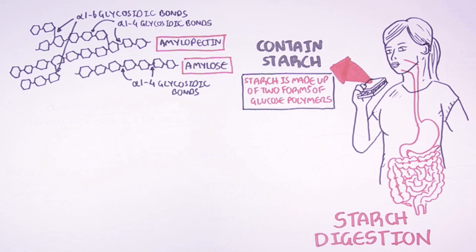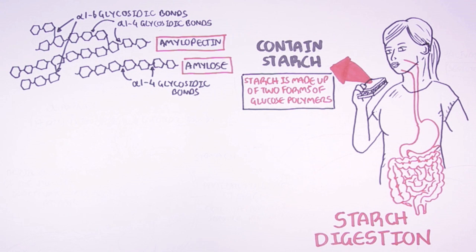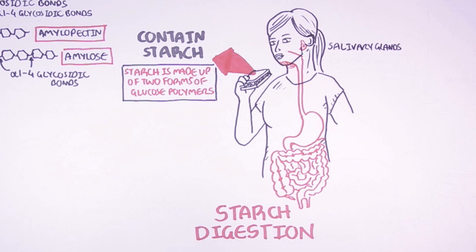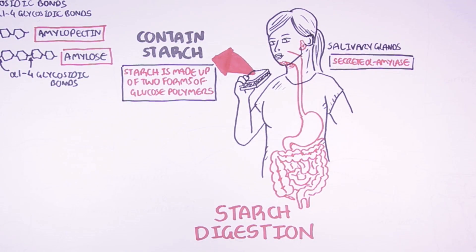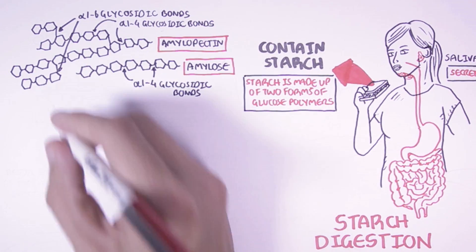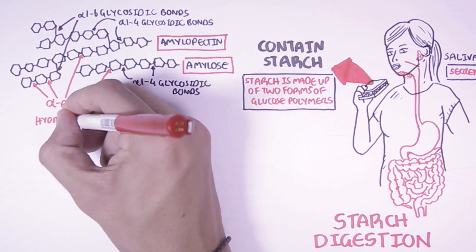So now let's see what happens when starch is ingested. What happens first is that the mouth will break down the starch both physically and chemically. Physically by the jaws, teeth and tongue. Chemically by the salivary glands. The salivary glands secrete saliva, but also the enzyme within it called salivary alpha-amylase. What alpha-amylase essentially does is that it will break these bonds here, the alpha-1,2,4 glycosidic bonds.